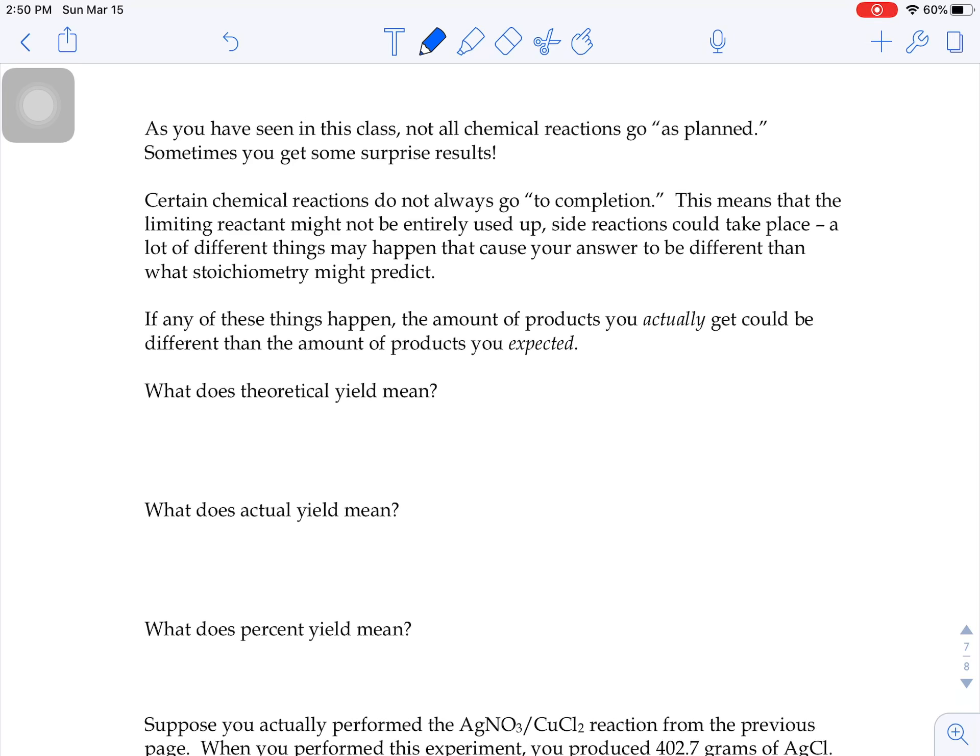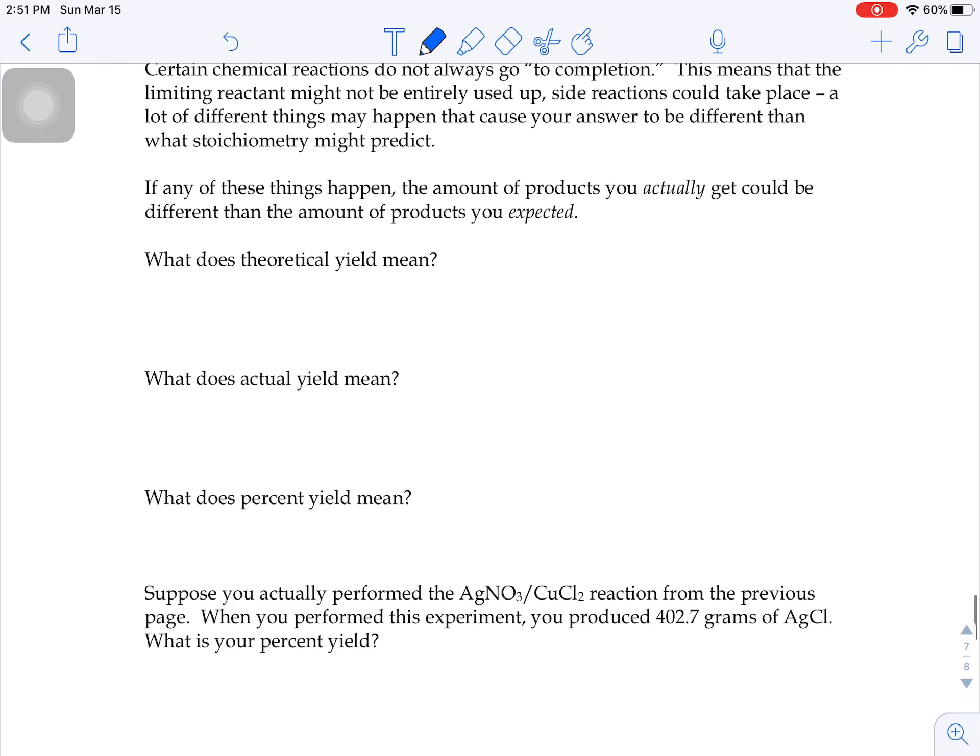That means that the limiting reactant might not entirely get used up. Side reactions could take place. There's a lot of different things that might happen that could cause your answer to be different than what stoichiometry might predict. If any of these things happen, the amount of products you actually get could be different than the amount of products you expected.